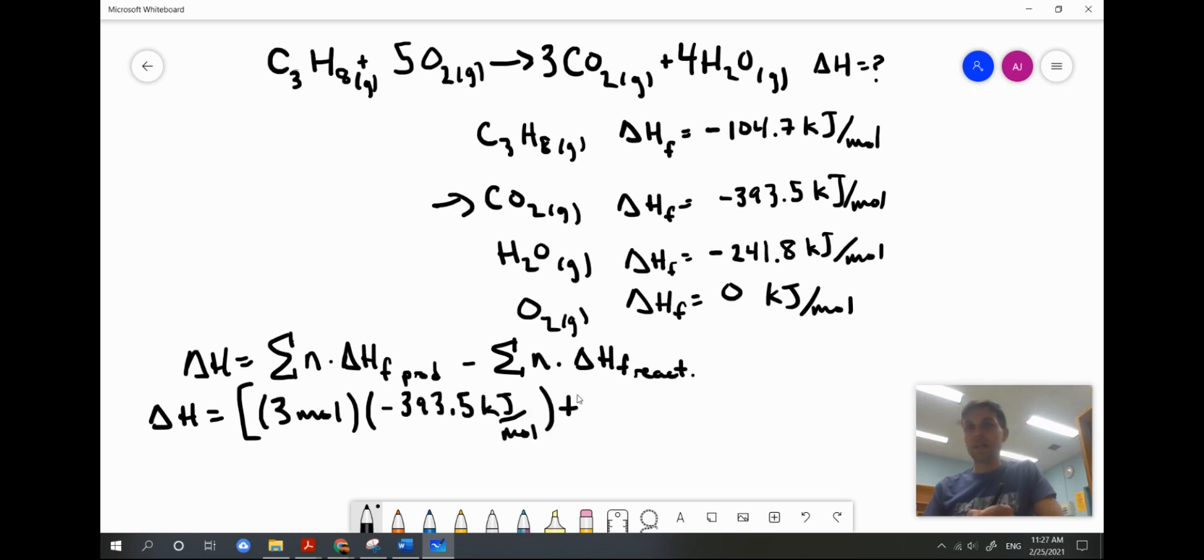My second product is water vapor, and I have four moles of water vapor, which I multiply by the heat of formation for water vapor. I've subbed my products, and now I'm going to do the same thing for my reactants. I'm going to split the equation into two lines here, just so I'm not crowded.